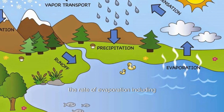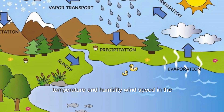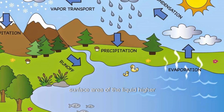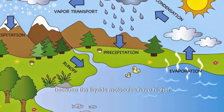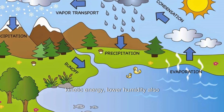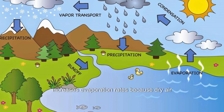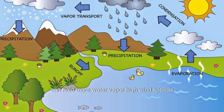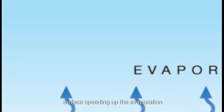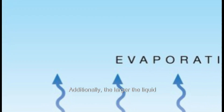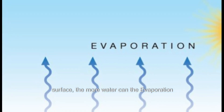Several factors influence the rate of evaporation, including temperature, air humidity, wind speed, and the surface area of the liquid. Higher temperatures lead to faster evaporation because the liquid's molecules have higher kinetic energy. Low air humidity also increases evaporation rates because dry air can hold more water vapor. High wind speeds carry away water vapor from the liquid's surface, speeding up the evaporation process. Additionally, the larger the liquid's surface, the more water can evaporate.